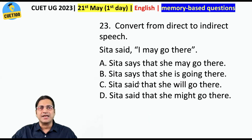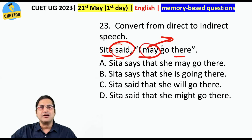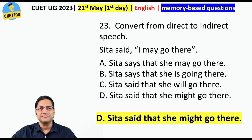Convert from direct to indirect speech. 'Sita said, I may go there.' The moment you see 'said' and 'may' — the past of 'may' is 'might,' and that is in only one of the options. Answer: 'Sita said that she might go there.' Easy.